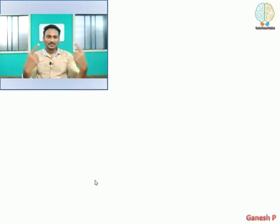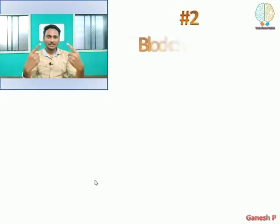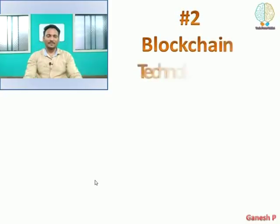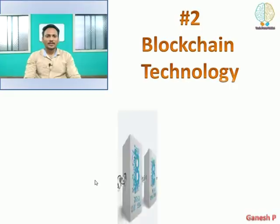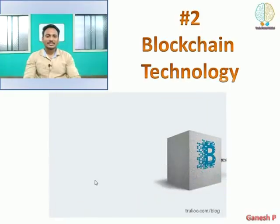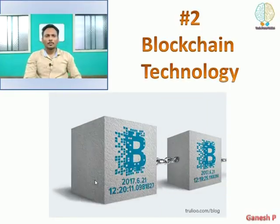The second technology is Blockchain. What is Blockchain? What is Bitcoin? Bitcoin is a digital currency — it's not a physical currency you can hold. That's your Bitcoin.